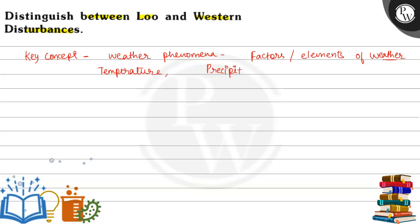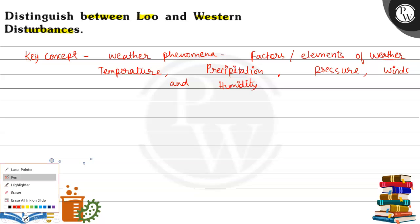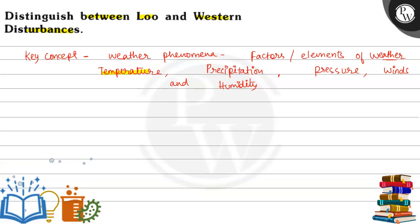Rainfall is one form of precipitation, whereas there can be other forms of precipitation like snow and hail. So precipitation also impacts weather. Similarly, atmospheric pressure, winds, and humidity — these all are important factors of weather. Let us highlight them one by one.